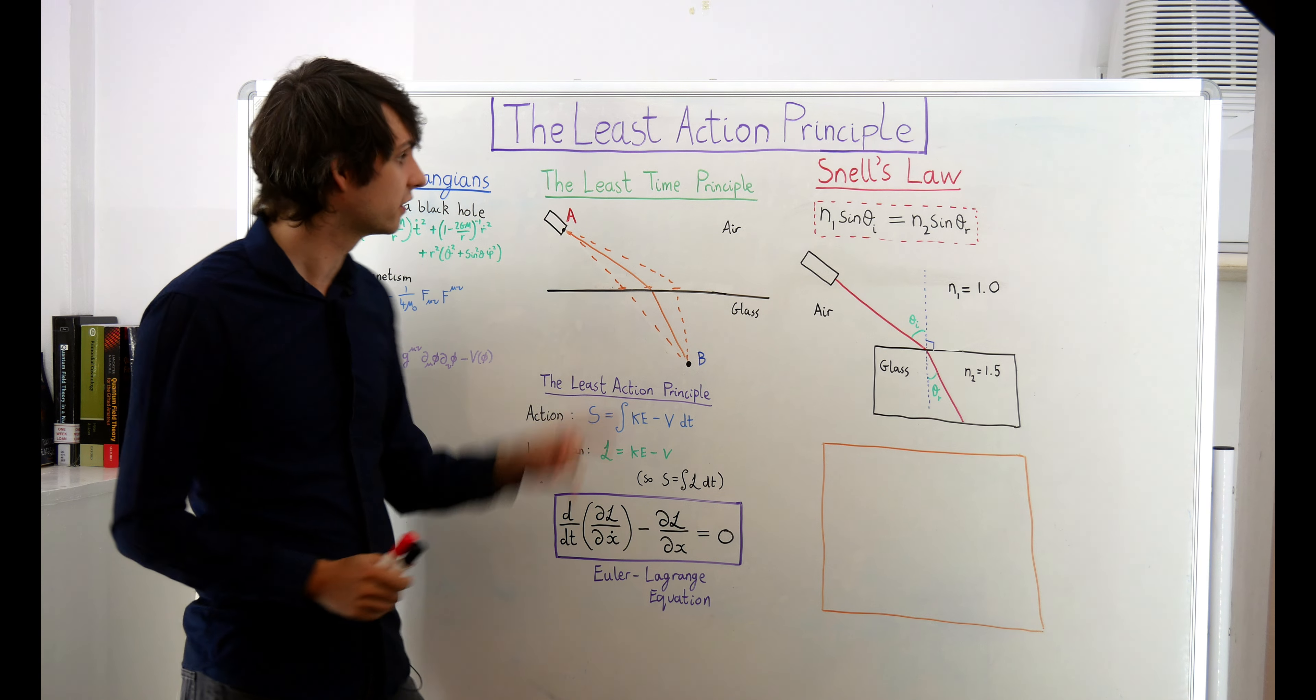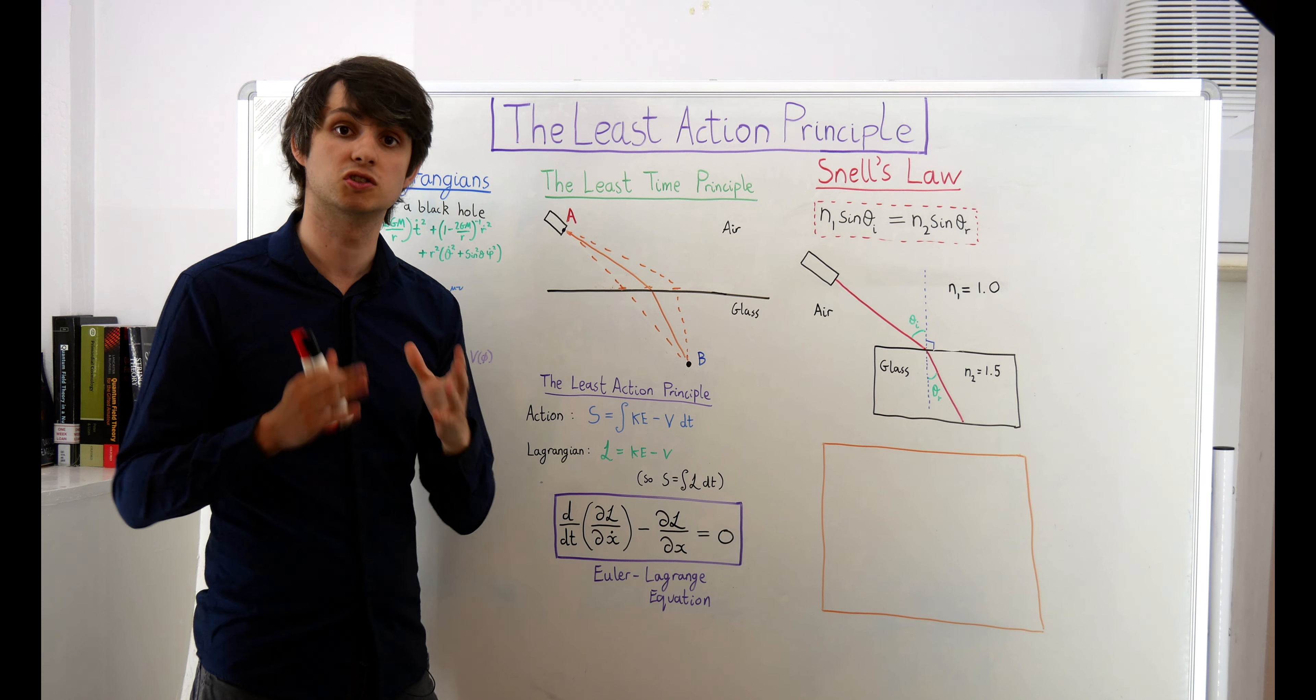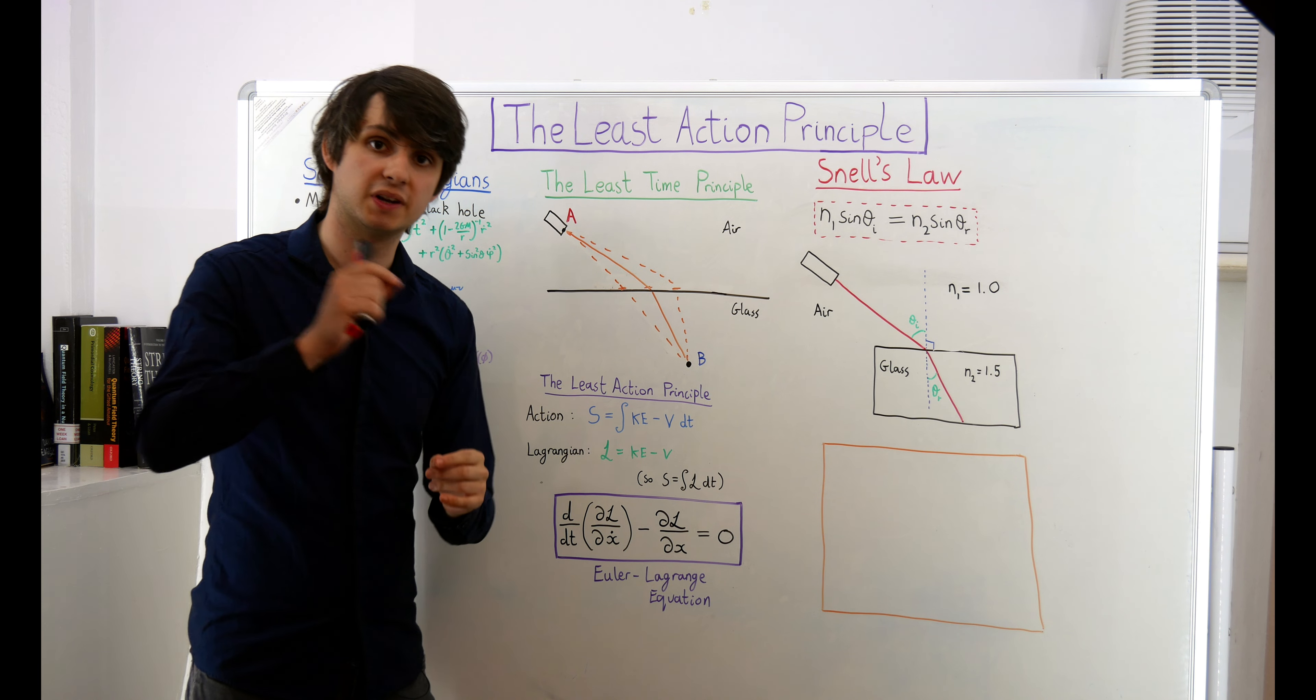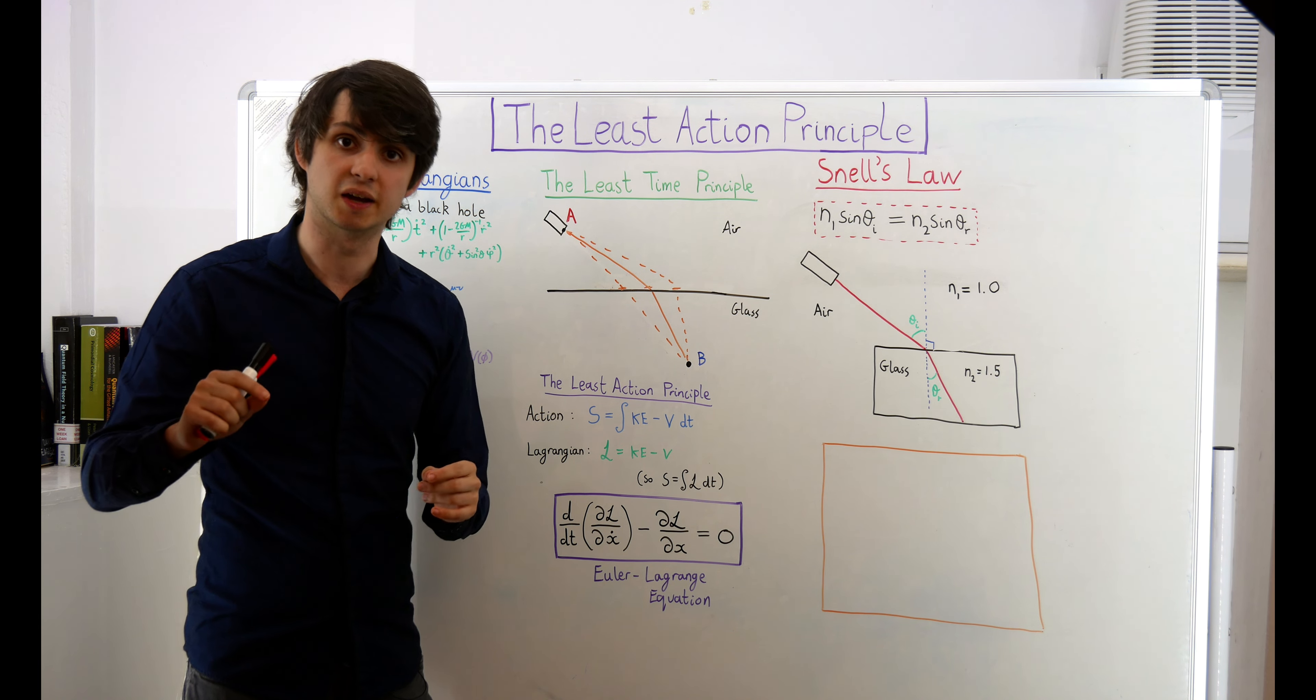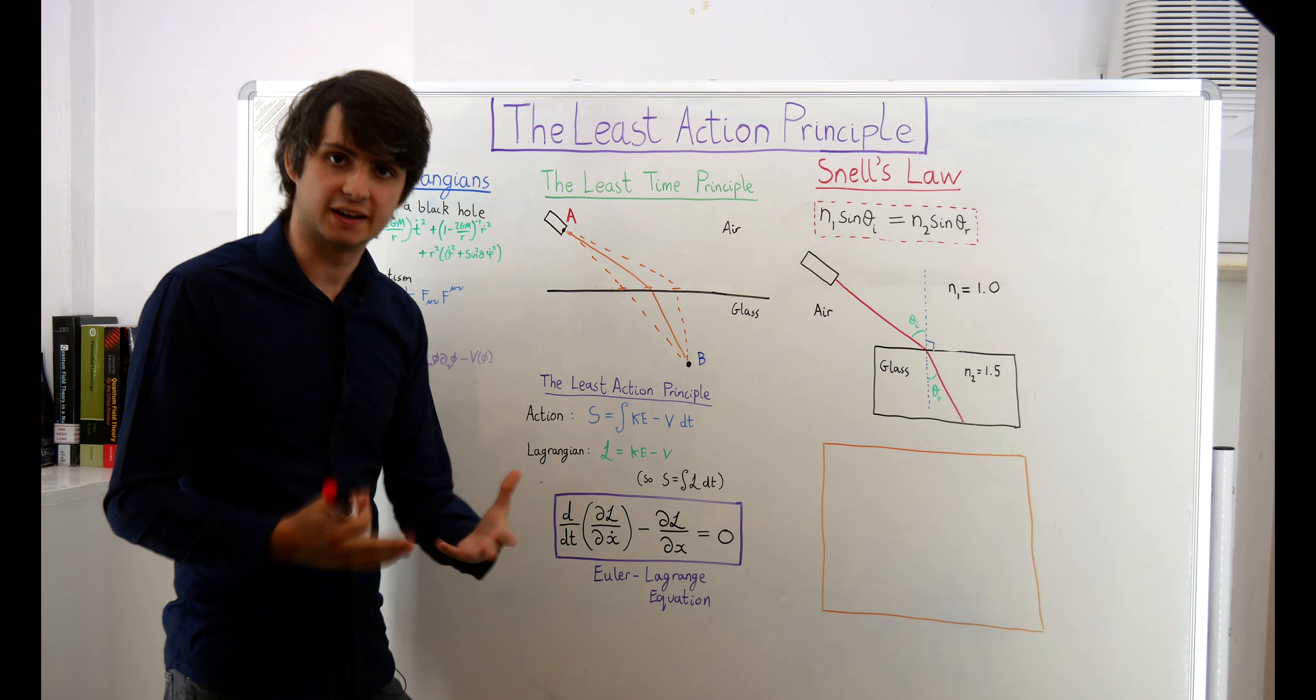which states that systems will evolve in such a way that minimizes the total action. This is a lot like the least time principle, which says that light evolves in such a way that minimizes the total journey time. But now, instead of minimizing time, we're minimizing this thing called action.